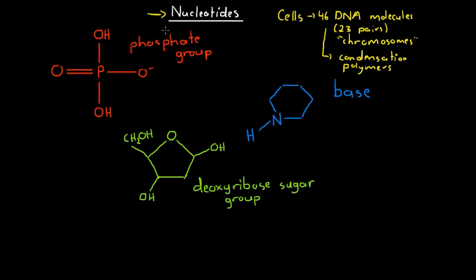What is a nucleotide? A nucleotide contains three different things: a phosphate group, which looks like this; a deoxyribose sugar group, which looks like this; and a base.